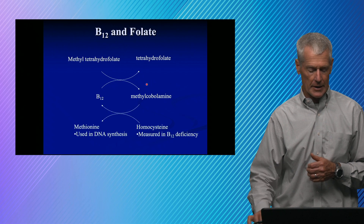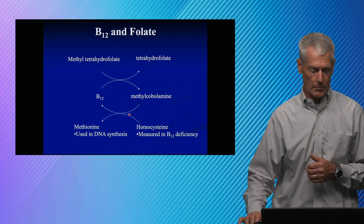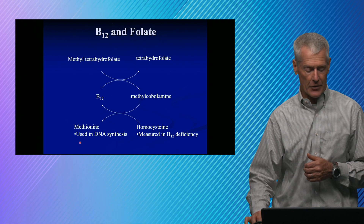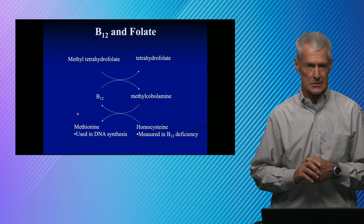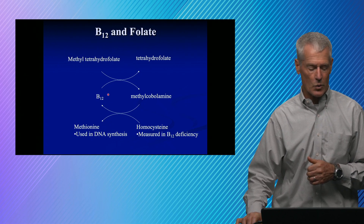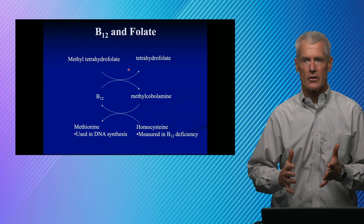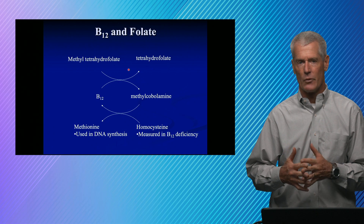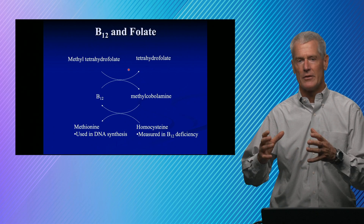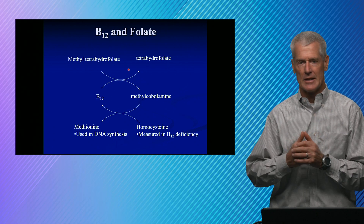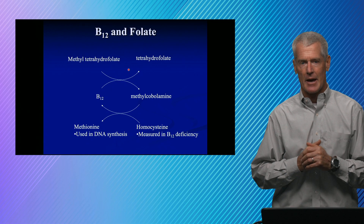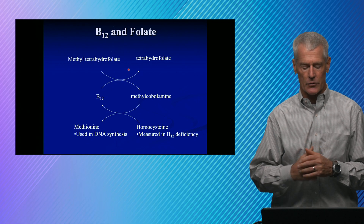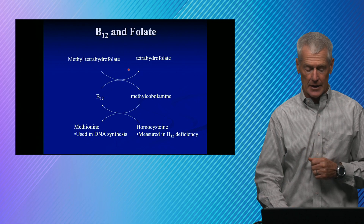Methylcobalamin transfers its methyl group to homocysteine to form methionine, and methionine is used in DNA synthesis. So if you don't have B12 or folate, you get decreased DNA synthesis. The end result in red cells is that you get large red cells released into circulation — you get macrocytosis and anemia.